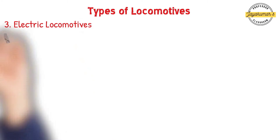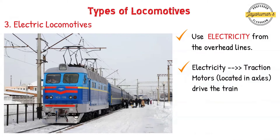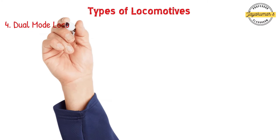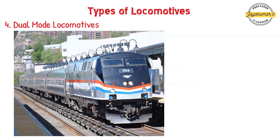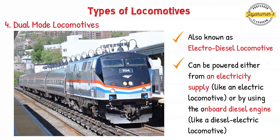A very popular type is electric locomotives, which use electricity from overhead lines, feeding it to electric traction motors located in the axles that drive the train. You also have a fourth type: dual mode locomotives, also known as electro-diesel locomotives. These locomotives can be powered either from an electricity supply like an electric locomotive, or by using an on-board diesel engine. Based on requirements, we can easily switch between diesel and electric modes.